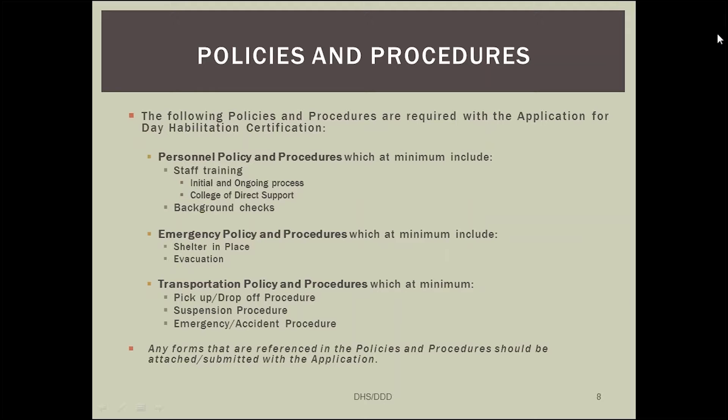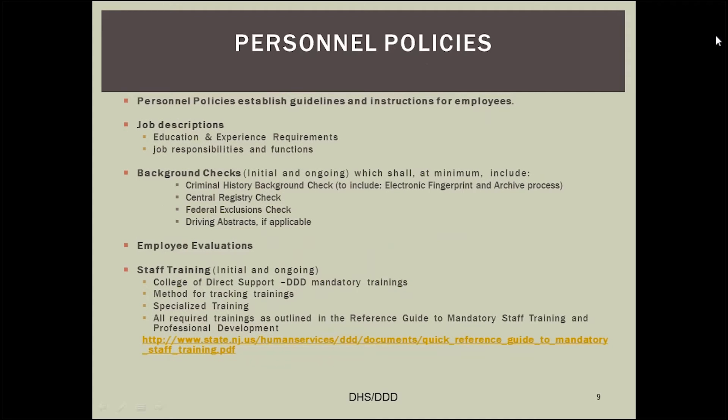After reviewing your service delivery plan and activity calendar, we look at three specific policies and procedures. The three policies and procedures that must be submitted at the time of your application are personnel, emergency, and transportation. While there are other mandatory policies and procedures your agency is required to have, these are the three required at the time of application.